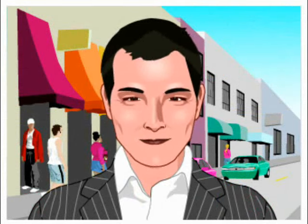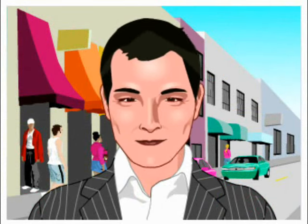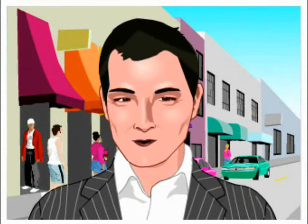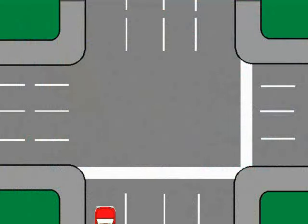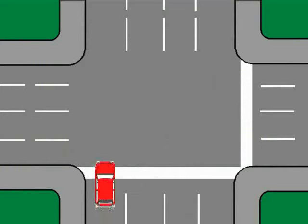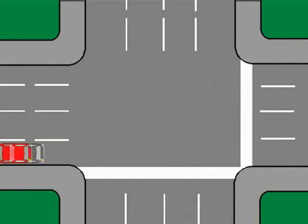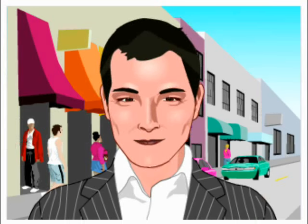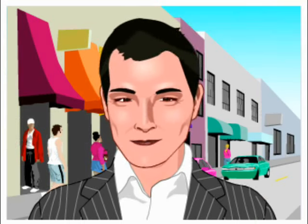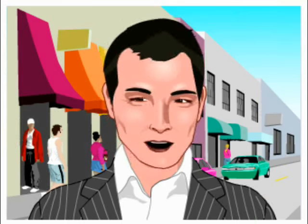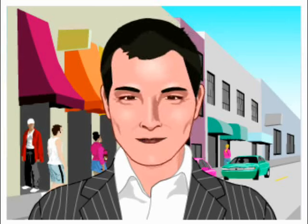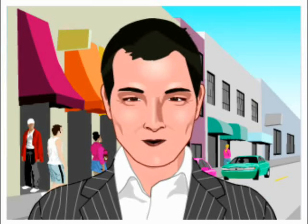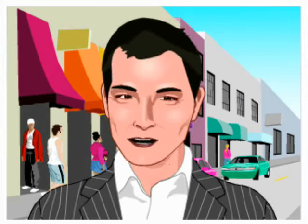Two of nine. Left turns from a one-way street to another one-way street. When approaching an intersection, you must signal your intention to make a left turn and move into the lane of the one-way street. Make sure your way is clear. Stop and move into the lane of the one-way street on which you wish to travel.